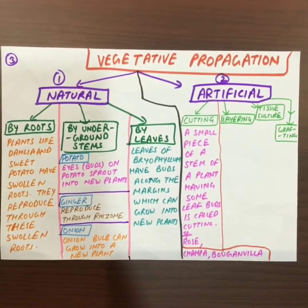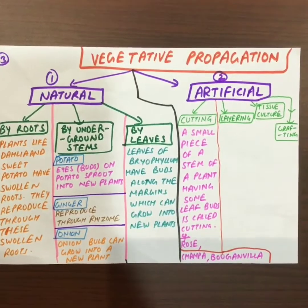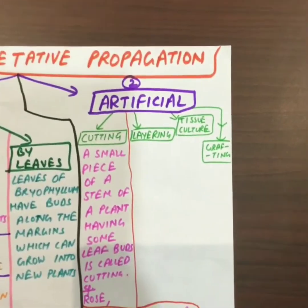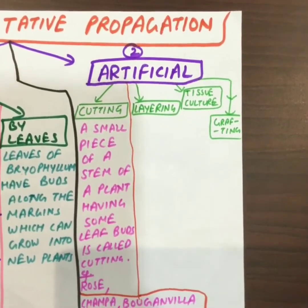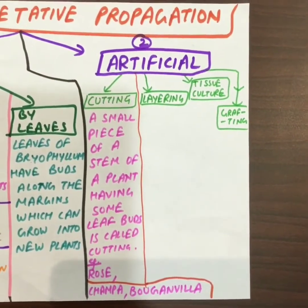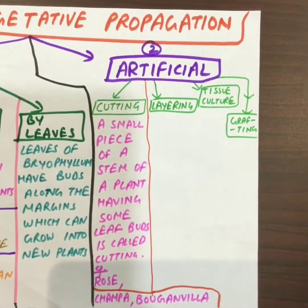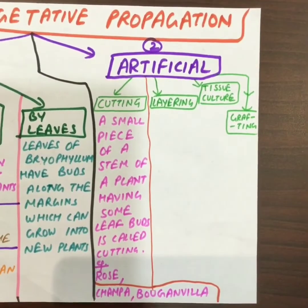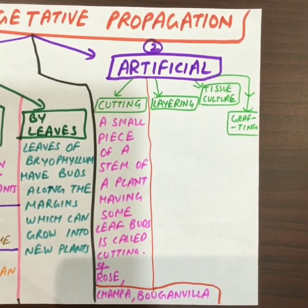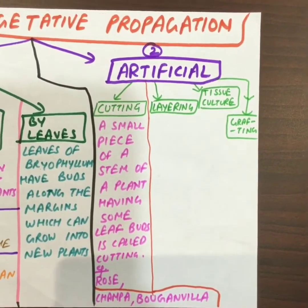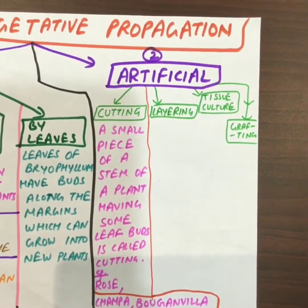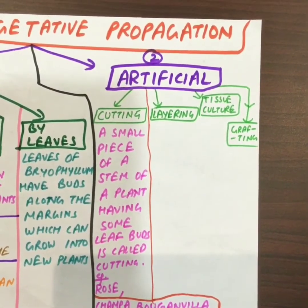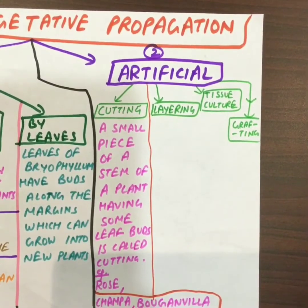Now let's learn about artificial vegetative propagation. There are four ways in which this is done: cutting, layering, tissue culture, and grafting. Cutting — a small piece of a stem of a plant having some leaf buds is called a cutting. For example, rose, champa, and bougainvillea are grown by this process. We shall learn the other processes in our coming classes.